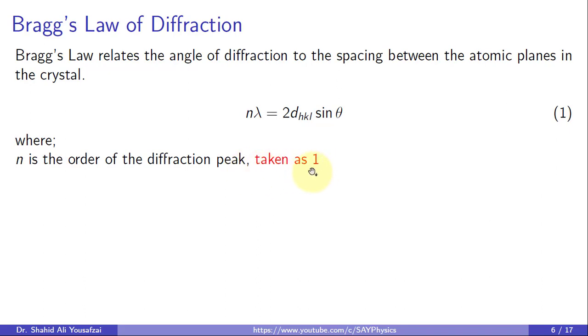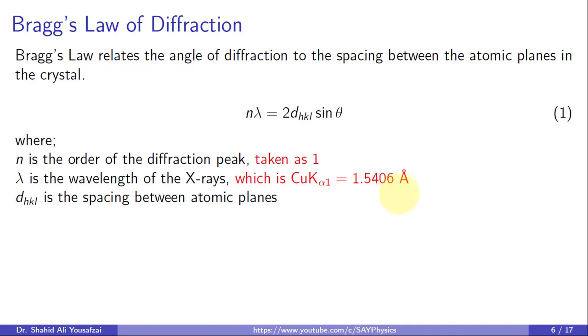Lambda represents the wavelength of the X-ray used in the experiment, which is usually copper Kα₁ = 1.5406 angstrom. d_hkl is the interplanar spacing and θ denotes the diffraction angle, which can be obtained from the XRD plot.